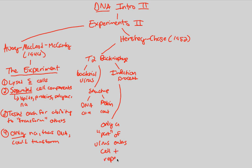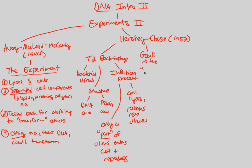Only a part of the virus enters the cell and also reproduces. Hershey and Chase knew this but didn't know whether that part was the DNA core or the protein coat. Upon completion of entry and reproduction, the cell lyses, opens up, and releases new viruses. Something is governing this complicated infection, replication, and release process. Their overarching goal was: is that part DNA or protein?